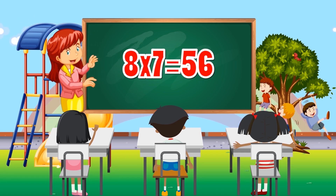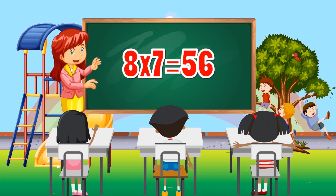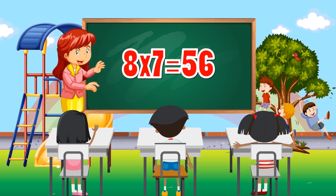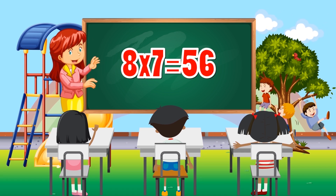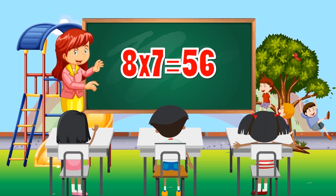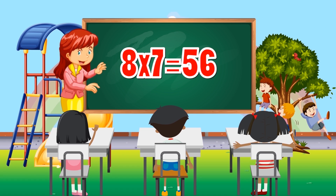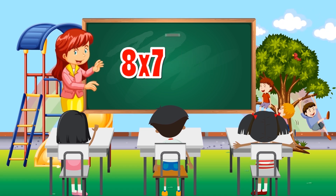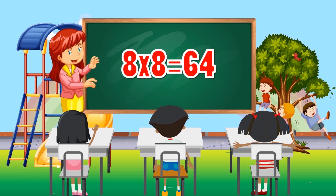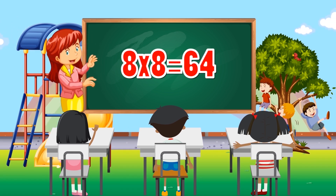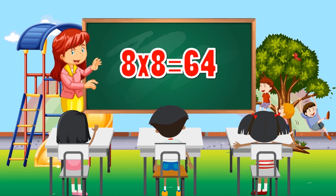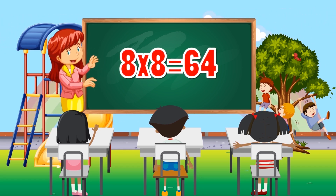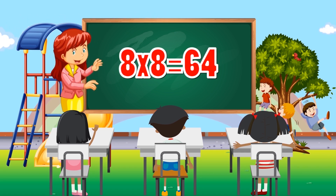8 times 7 equals 56. 8 times 8 equals 64.